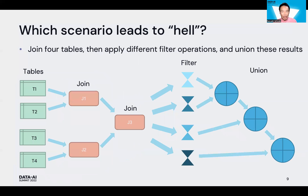What scenario leads to the hell in terms of performance? I'll explain the scenario with this diagram. In this scenario, four databases are joined. Then four defined filter operations are applied to the join result. Then the four filter results are unioned into one data frame on the right-hand side.